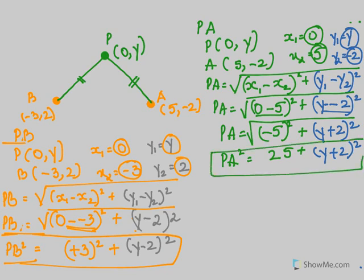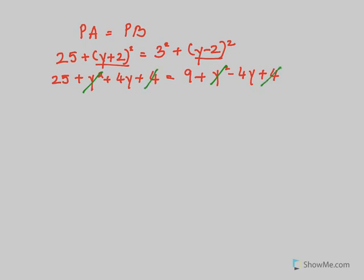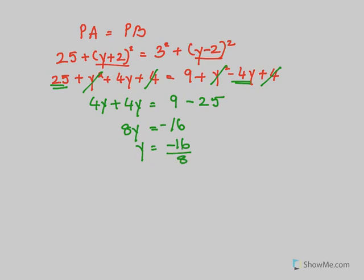In the next step, PA = PB, so PA² = PB². Expanding: 25 + (y+2)² = 9 + (y-2)². Using (a+b)² = a²+2ab+b², we get 25 + y² + 4y + 4 = 9 + y² - 4y + 4. The y² terms cancel, giving 4y + 4y = 9 + 4 - 25, so 8y = -16, therefore y = -2.